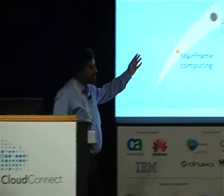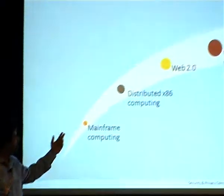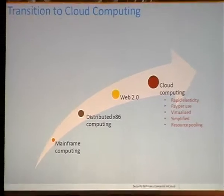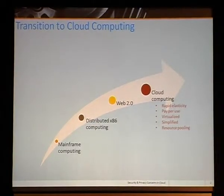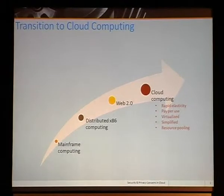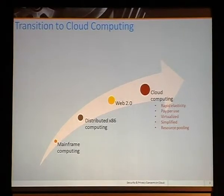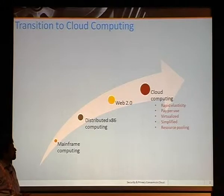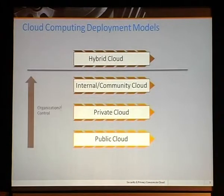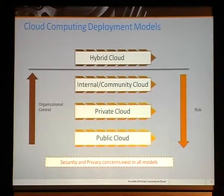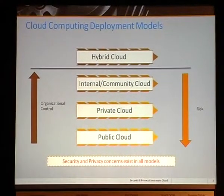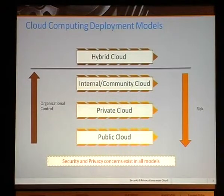The evolution has happened from mainframe computing to distributed computing to Web 2.0 and now to the cloud. There are many advantages why people are looking to move to cloud — mainly rapid elasticity, pay per use, virtualization, simplified management, and resource pooling. However, as we move from internal community cloud to private cloud to public cloud, the risk also increases from an organization's perspective, and organizational control is also being lost.